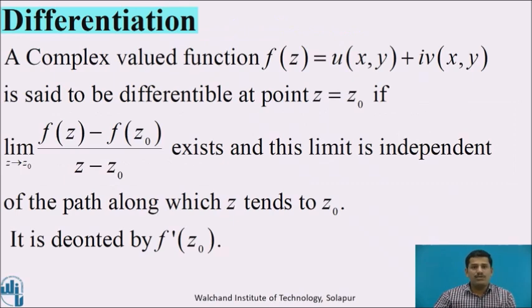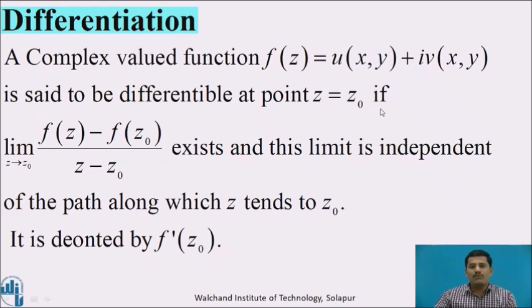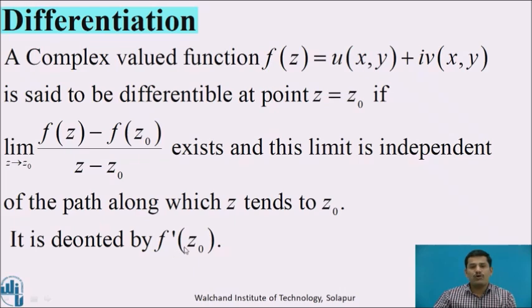Let us start this lesson with the definition of differentiation. A complex valued function f of z equal to u of x,y plus i v of x,y, in short written as u plus iv, is said to be differentiable at a point z equal to z0 if the limit of the quantity f of z minus f of z0 divided by z minus z0 as z tends to z0 exists, and if the derivative exists, it is denoted by f dash of z0.